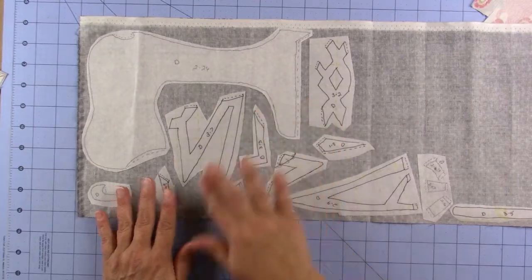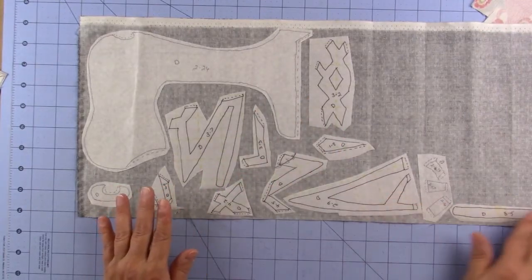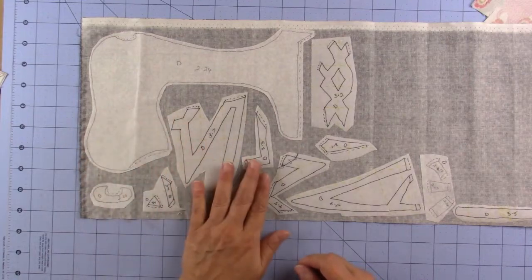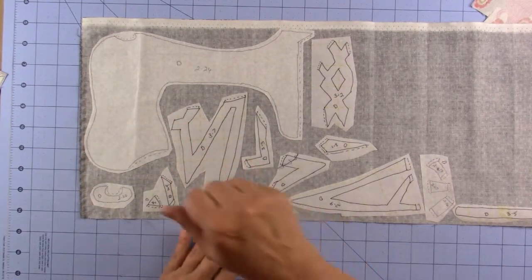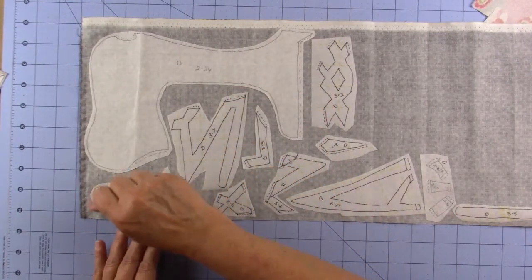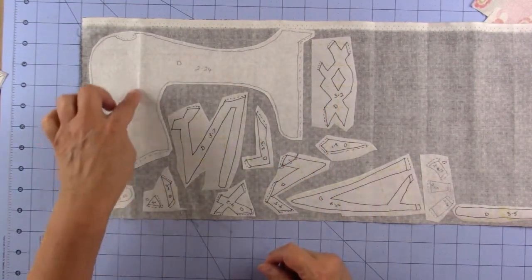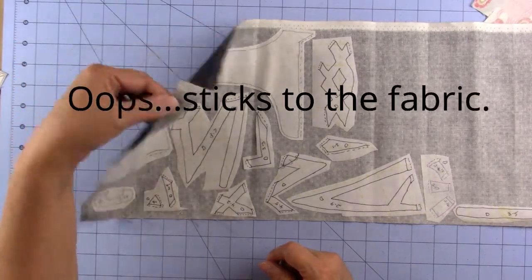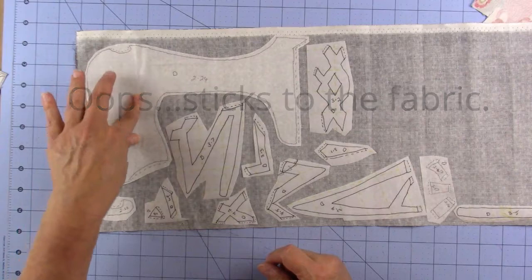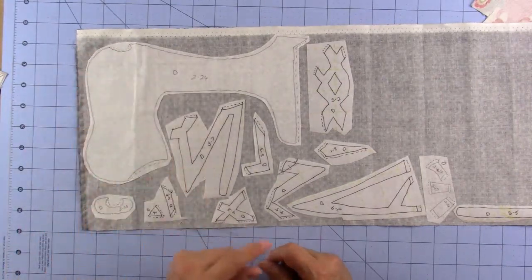When you're happy with where you have them and you've got all the pieces that you need, then you're going to put your applique pressing sheet on top and you're going to lightly press it. You don't need to steam at this point, but you're going to press and heat it up just enough that it sticks to the paper without coming off. It'll stick pretty good before you press it, but ironing it will just give it a little bit better press.